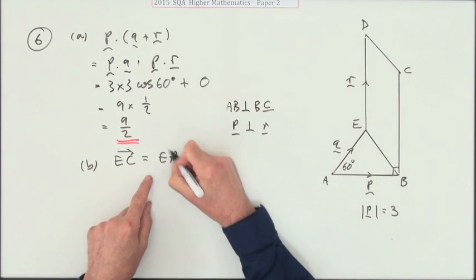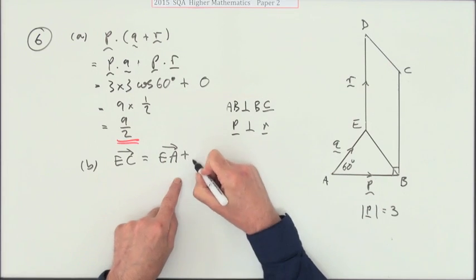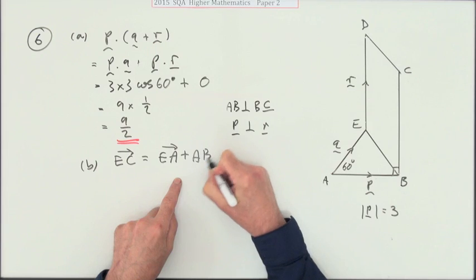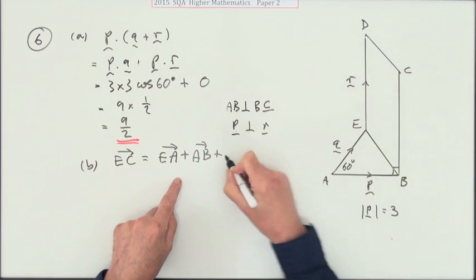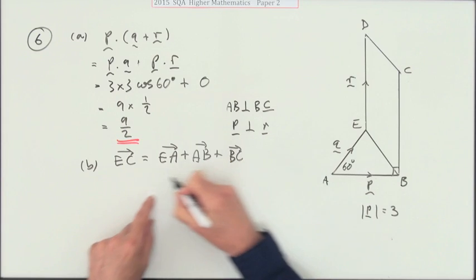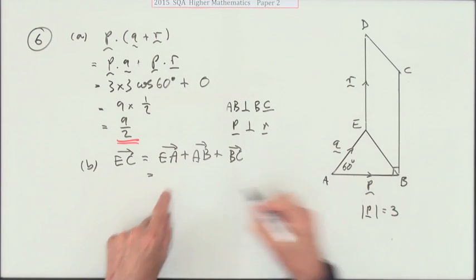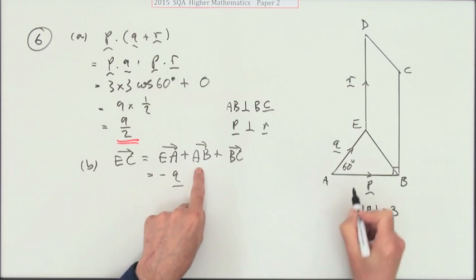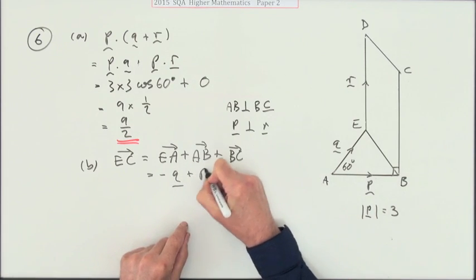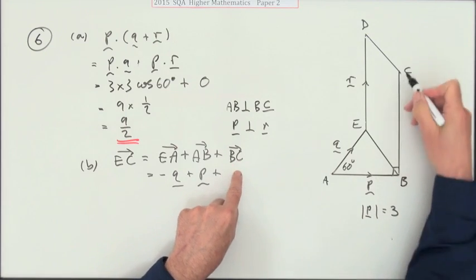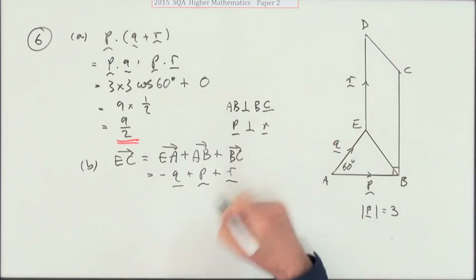I'll spell it out: I'm going to go from E to A, just rushing a wee bit faster, and then go from A to B, and then go from B to C. So I've still ended up with the same displacement. Now E to A is negative q, A to B is with p, and B to C is just the same as r.